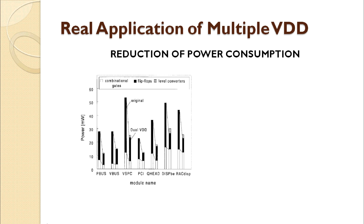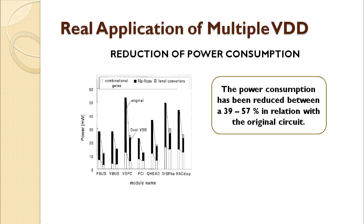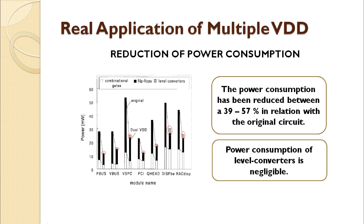Finally, they have analyzed, as shown in the figure, the power consumption regarding the several modules which form the media processor chip. From the figure, we can conclude that using multiple VDD voltages, the power consumption of the different modules is reduced considerably in relation to the original circuit, between 39% and 57%. In addition, we can visualize that the power consumption of the level converters is negligible compared to the power consumption of the flip-flops and the combinational gates.